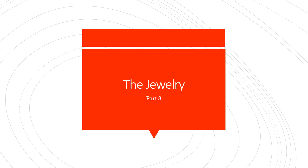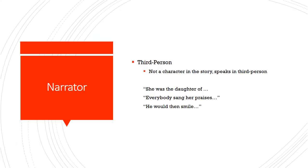Let's move on to The Jewelry by Guy de Maupassant. It's a third-person narrator because they're not a character in the story and only speak in the third person — always referring to he, she, or they. 'She was the daughter of...' 'Everybody sang her praises.' 'He would then smile.' There's no personal perspective in the story. And it's a limited third-person perspective because we only get the thoughts and feelings of Lantan.